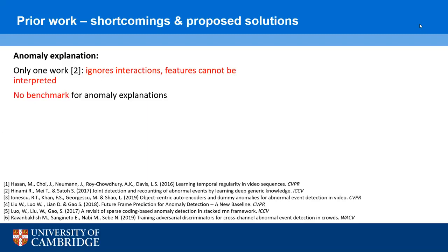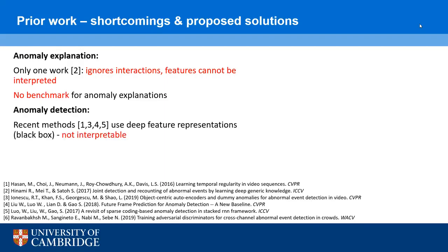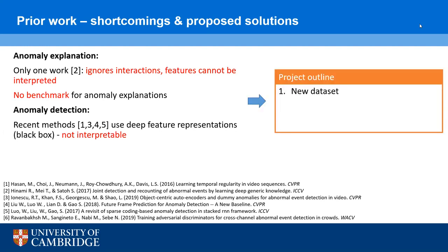A second challenge lies in the fact that there is currently no benchmark for the task of anomaly explanation, and even if our system produced anomaly explanations, we wouldn't be able to currently measure how good it is. Other anomaly detection methods use deep feature representations and are effectively a black box and cannot be interpreted. To tackle these shortcomings, my project starts by developing a new dataset for benchmarking anomaly explanations, to evaluate how good my systems are and also to push further research in this area.